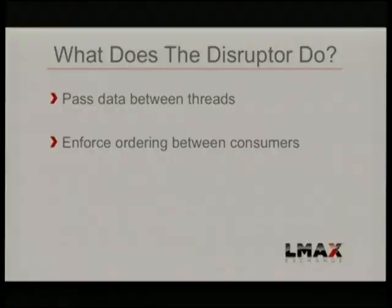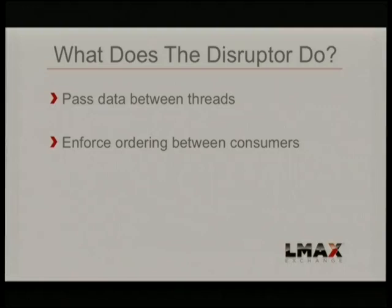The core premise of the Disruptor is that we want to be able to pass data between threads really fast. When we first built the Exchange, we tried to be multi-threaded and process orders in parallel, and we found there was a huge amount of contention trying to get the common state of the order book. There wasn't much we could do to avoid that except go single-threaded, so our core matching engine is actually single-threaded and it goes much, much faster that way.